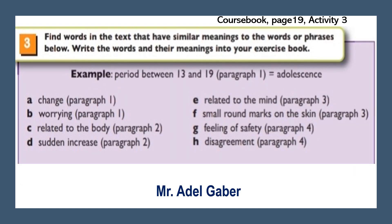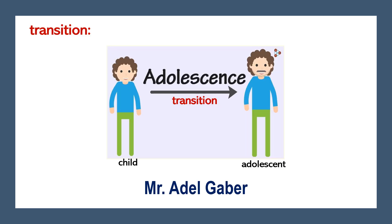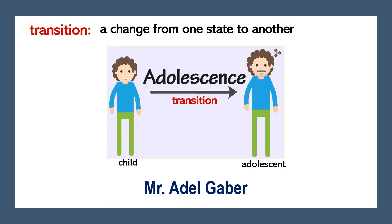Look at your course book page 19, Activity 3. Find words in the text that have similar meanings to the words or phrases below. Write the words and their meanings into your exercise book. But before you do this activity, let's discuss the meanings of some words. Transition: a change from one state to another, like from childhood to adolescence. Stressful: worrying.